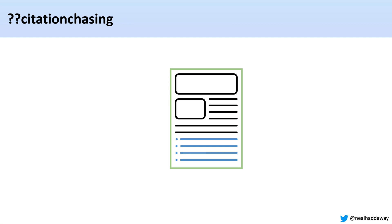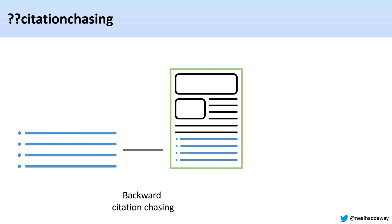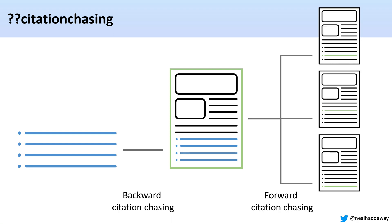So what is citation chasing? It's a really useful part of the searching process of an evidence review, systematic review or meta-analysis, and it's a supplementary method to look for additional articles along with searching bibliographic databases. Backward citation chasing occurs where we assemble the list of references from an article, and forward citation chasing occurs when we identify all articles that have cited our article. Starting from a large set of articles, we can get all of the references within those articles and find all articles that have cited that set — a useful way of mopping up articles missed by keyword searching.